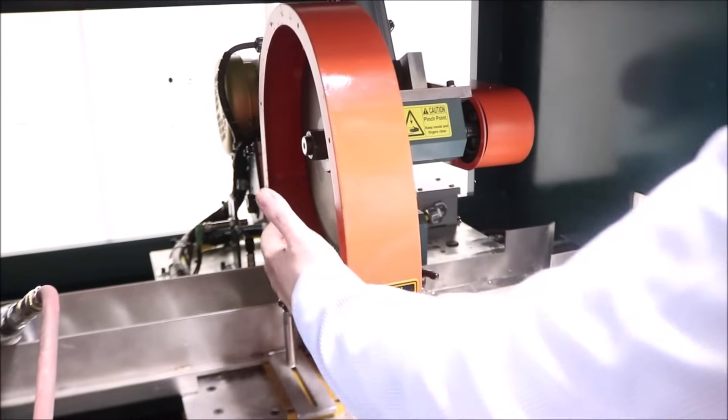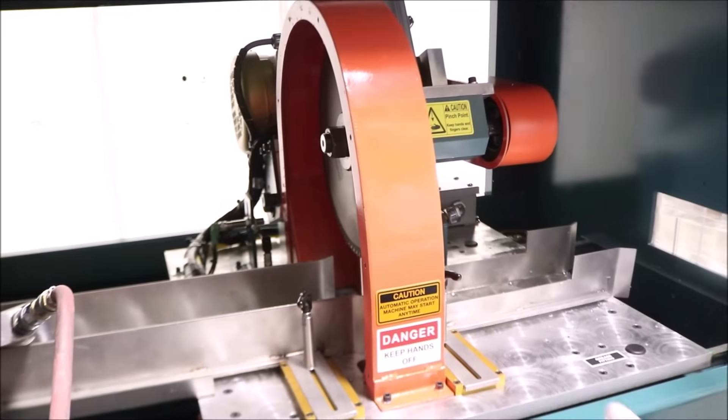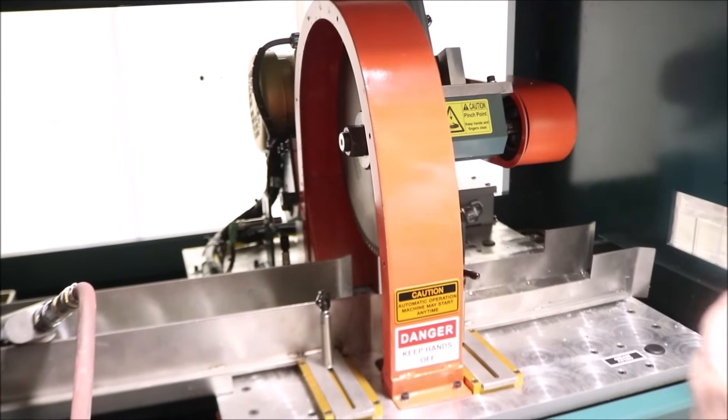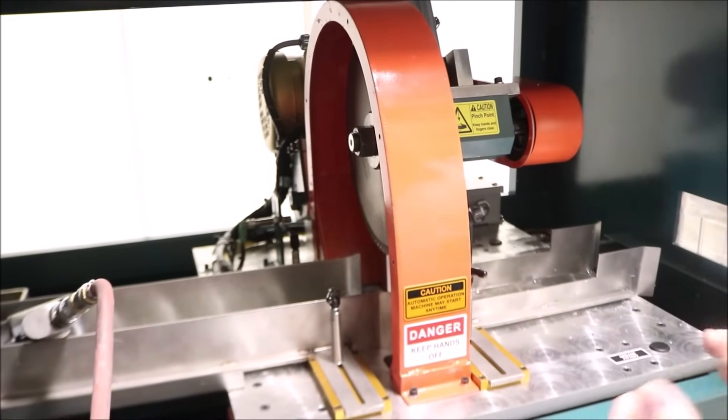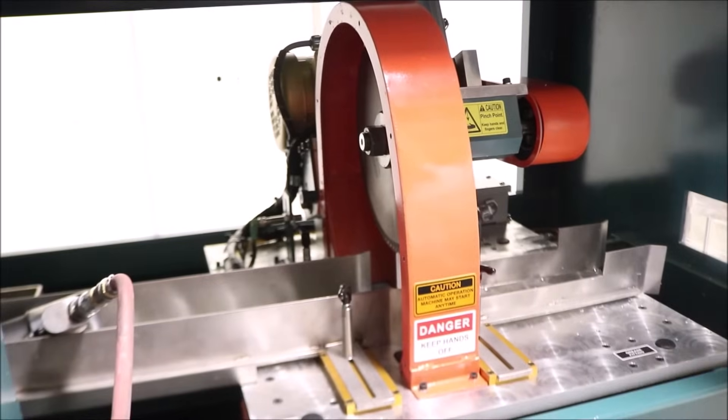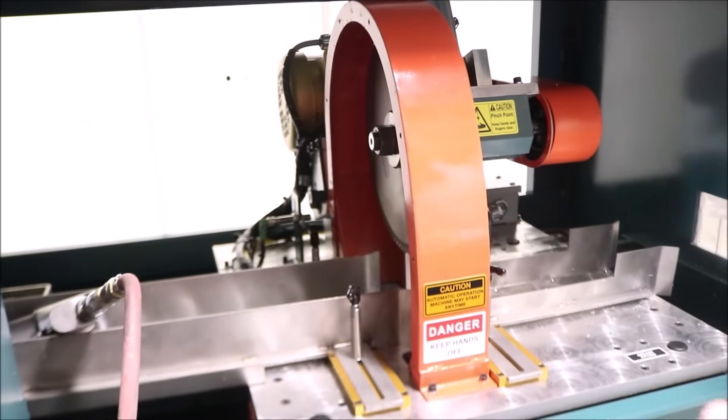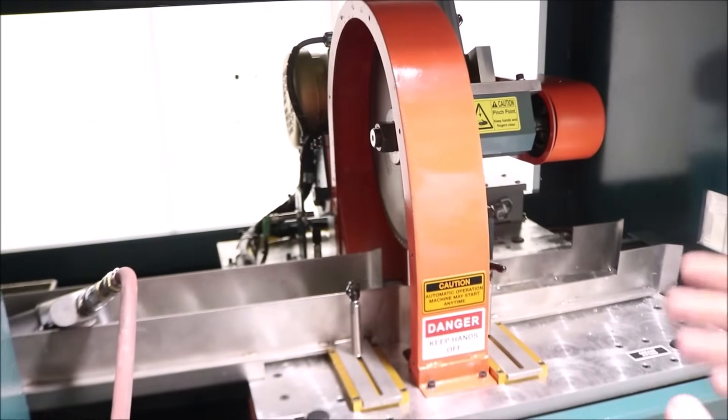To remove the blade from the machine, the first thing you will need to do is make sure that your machine is powered down so that you don't have any accident. Although with the door open, the e-stop is engaged and the machine will not operate.